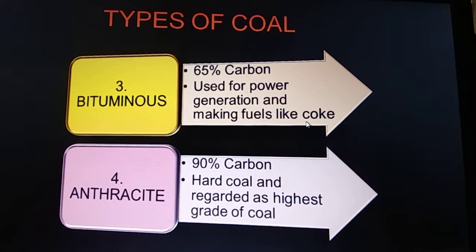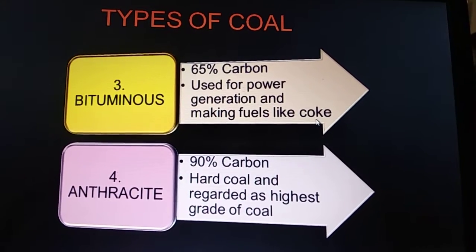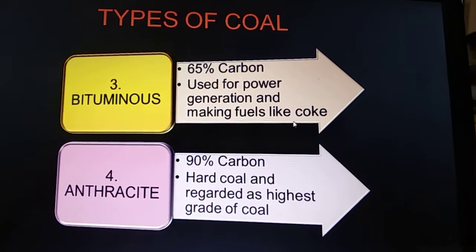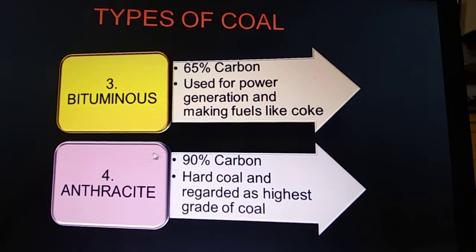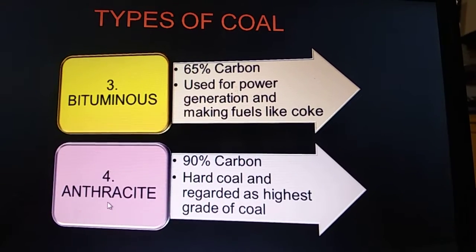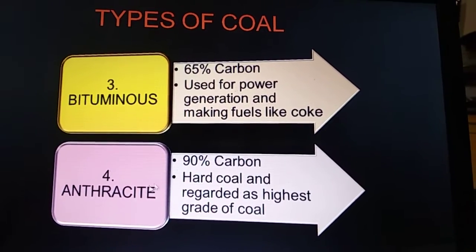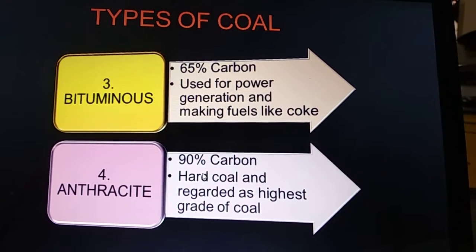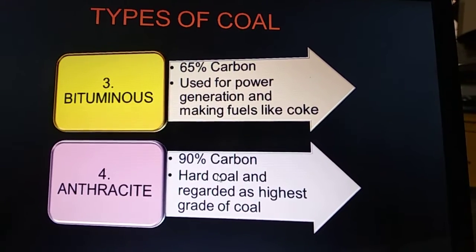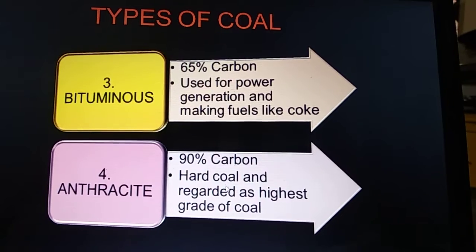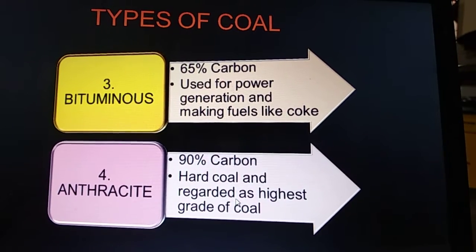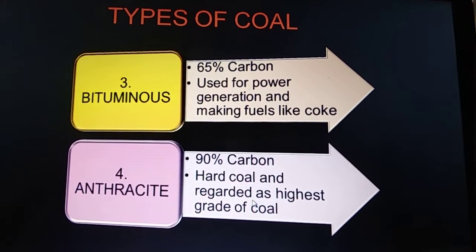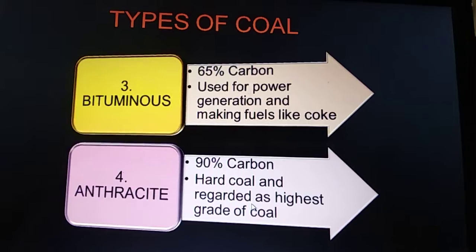Coke is a product of coal and it is very useful. Then we have anthracite, which has 90% carbon. It is hard coal and regarded as the highest grade of coal. These are the different types of coal.